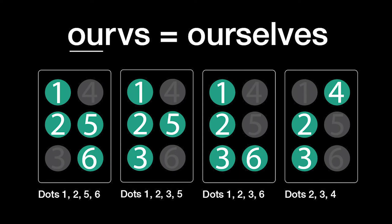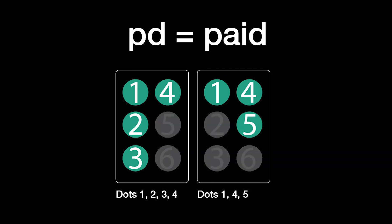Ourselves is O-U plus R-V-S: dots 1, 2, 5, and 6, plus dots 1, 2, 3, and 5, plus dots 1, 2, 3, and 6, plus dots 2, 3, and 4.